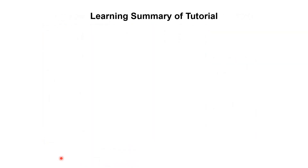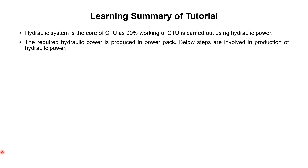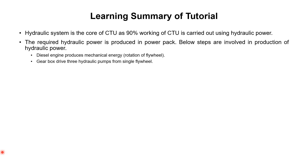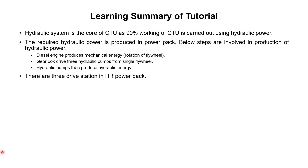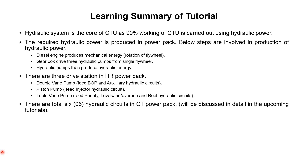To summarize this tutorial: the hydraulic system is the core of the coil tubing unit, as 90% of its working is carried out using hydraulic power. The required hydraulic power is produced in the power pack through these steps: the diesel engine produces mechanical energy (rotation of the flywheel), the gearbox drives three hydraulic pumps from a single flywheel, and the hydraulic pumps produce the required hydraulic energy. There are three drive stations: the double vane pump feeding BOP and auxiliary circuits, the piston pump feeding the injector circuit, and the triple vane pump feeding the priority, level wind override, and reel circuits. There are a total of six hydraulic circuits in the coil tubing unit power pack, which will be discussed in detail in the next tutorials.